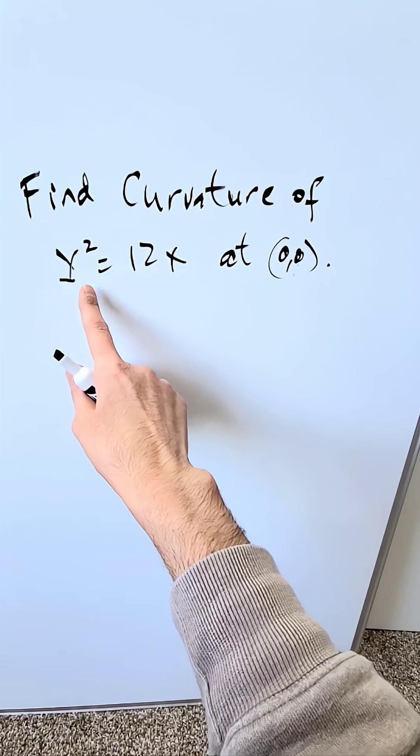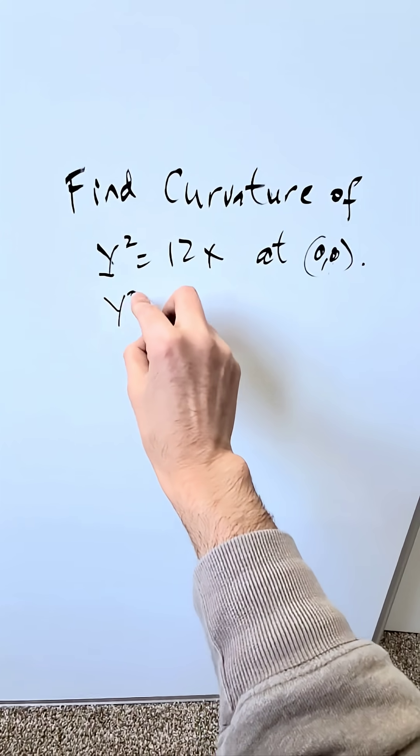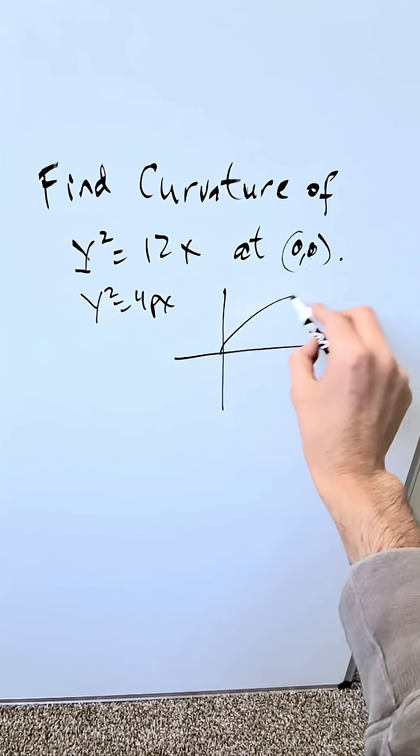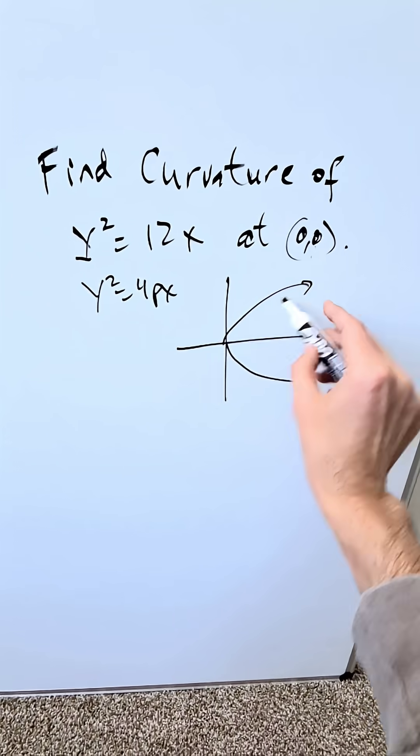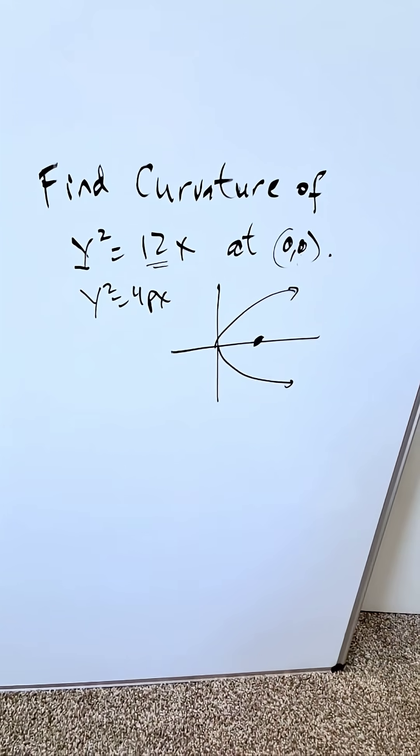What is the curvature of Y²=12x at the origin? You're looking at the form Y²=4px, a right-facing parabola where clearly the p value is 3 because 4 times 3 gives you 12. The focal point is at (3,0).